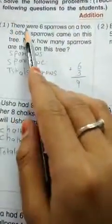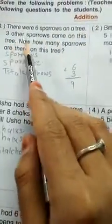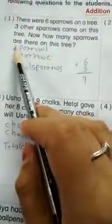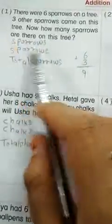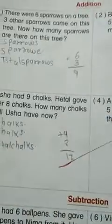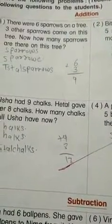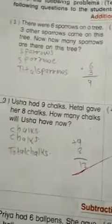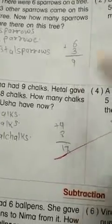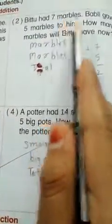Number 38: solve the following word problems. There are 6 sparrows on a tree. 3 other sparrows come to this tree. Now how many sparrows are there on this tree? So 6 plus 3 equals 9 sparrows.